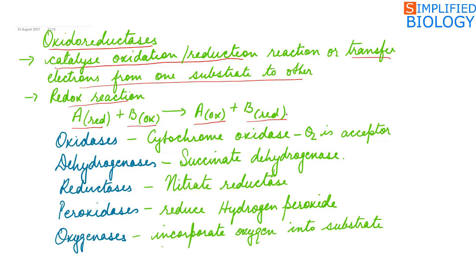Examples of oxidoreductases include oxidases. One example is cytochrome oxidase, used in the electron transport chain, where the final acceptor of electrons is oxygen.